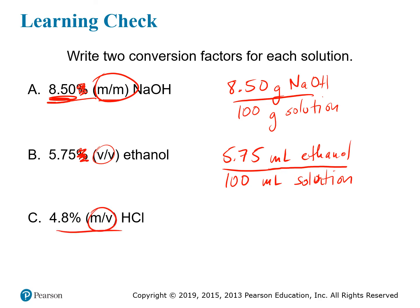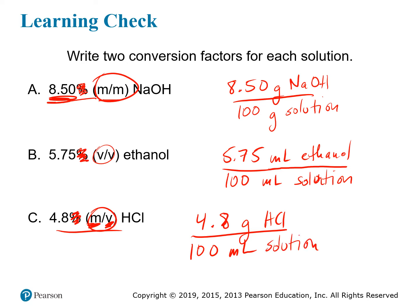For the m/v conversion factor, we put 4.8 grams of HCl as the numerator out of 100 milliliters of solution in the denominator. You could scale both up — kilograms per liter — but make sure to scale both by the same factor. It's easiest to just remember grams and milliliters. Each of these conversion factors also has a corresponding reciprocal conversion factor — the summary chart shows both forms for all three concentration types.